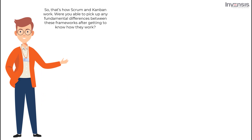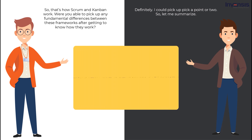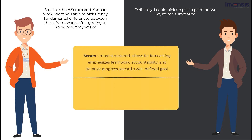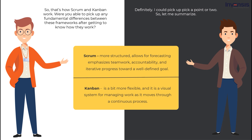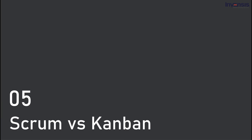From the discussion we've had so far, you have understood the fundamental differences between these two frameworks. Scrum is more structured, allows for forecasting, and emphasizes teamwork, accountability, and iterative progress toward a well-defined goal. On the other hand, Kanban is a bit more flexible — it is a visual system for managing work as it moves through a continuous process. Now you know how they implement a pull system in two totally different ways. Let us dig a little deeper and see the key differences between these two frameworks.